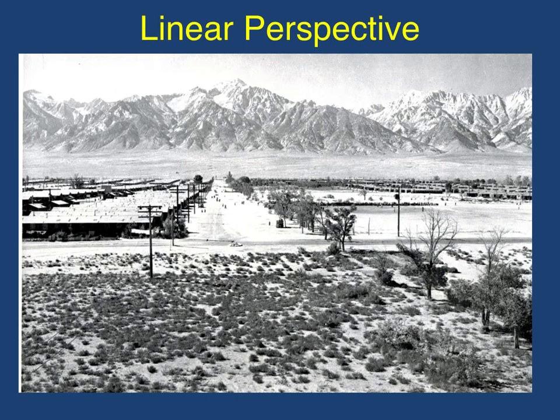Adams is also playing around with perspective in this — he is actually taking this photograph from a guard tower. This is Manzanar, which was an internment camp of Asian Americans during World War II. When Adams was invited to go into the camp, he was told he could not photograph the guards, the guard towers, or any of the guns. So with this photograph, he's actually letting the viewer know of the guard towers without ever showing them. You can see from looking around there are no tall trees or other buildings, so you know he had to be from some elevated point of view — hence, he was in the guard tower.